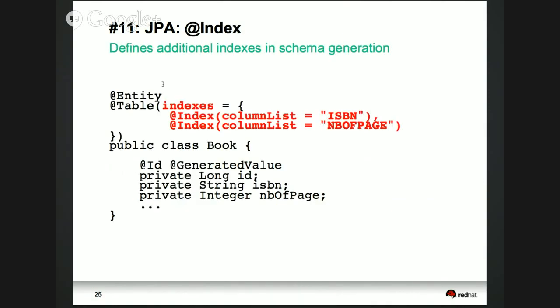Because you can generate the database schema from JPA entities, you can also specify what indexes need to be generated. A primary key always has an index, but now you can add an @Index annotation to also generate indexes on, say, ISBN and number of pages. This is a convenience since your scripts and database are generated accordingly.